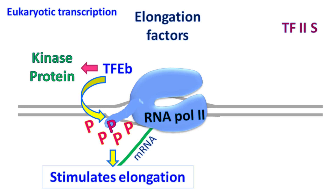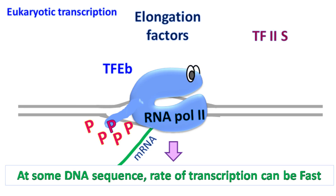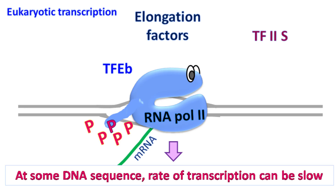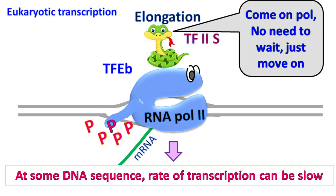The other factor involved in elongation is TF2S. The rate at which RNA polymerase transcribes DNA is not the same at all DNA sequences — at some sequences the rate is fast, while at others it can be slow. TF2S helps to increase the rate of transcription at regions where it becomes slow, and does not allow RNA polymerase to pause, encouraging it to move on.